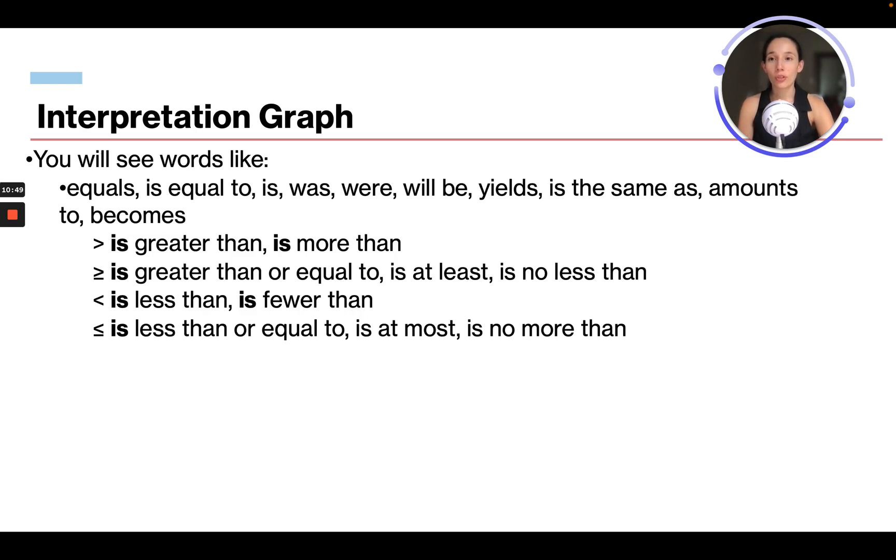So interpretation of graphs. You'll see words like equal, is equal to, is, was, were, will be, yields, is the same as, amounts to, and becomes. So is greater than, is more than. We kind of went over this in another part, but this is talking about with graphs. So we remember if something is greater than or is more than, we have our alligator pointing towards the bigger thing. So it's pointing towards what is greater.